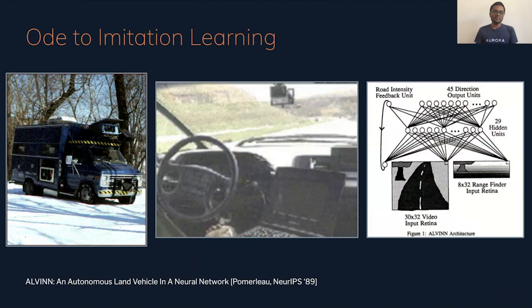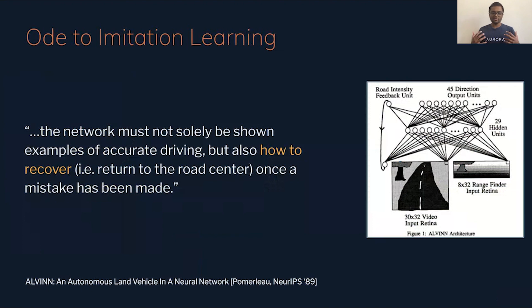What's really interesting is that in the paper, Dean mentions a phenomenon that we're now very used to in imitation learning. That is the problem of knowing how to correct from mistakes. So the network must not be shown only examples of expert demonstrations of accurate driving, but it must also be shown how to recover. A learner's going to have some amount of error, it's going to make some mistakes, and the network must be shown how to recover from those mistakes. It's so interesting to see this show up that long ago, but still be so relevant to how we approach the problems today.